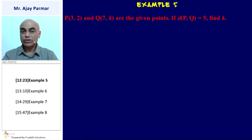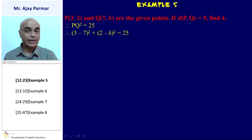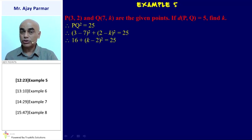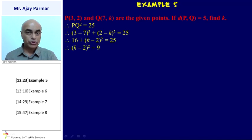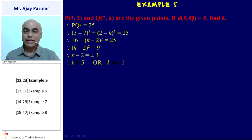Given P(3, 2) and Q(7, K) with PQ = 5, find K. PQ² = 25. Applying the distance formula: (3−7)² + (2−K)² = 25, so 16 + (K−2)² = 25, giving (K−2)² = 9, so K−2 = ±3. Therefore K = 5 or K = −1.